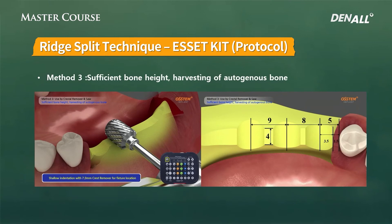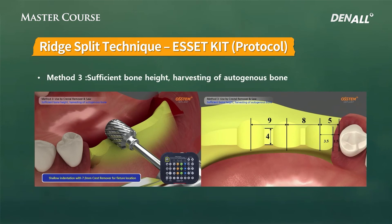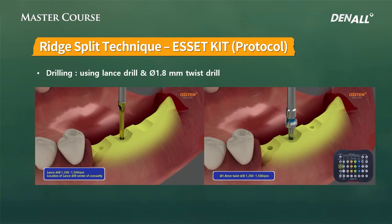Alveoloplasty can be done in two ways. One option achieves wider buccal-lingual width; however, it can cause interference with the patient's tongue and buccal flap, and is therefore not recommended. The recommendation is the first option: securing 4 mm of ridge width at the implant placement sites. If there is more than 4 mm of buccal-lingual width at the implant site, use a lance drill or 1.8 mm twisted drill for initial drilling.